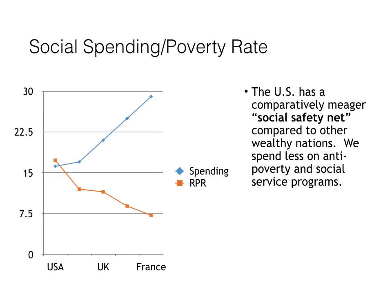There are a number of explanations economists put forward to explain this paradox, but one really simple one is that we have comparatively few tax-funded social welfare programs, or a comparatively meager social safety net compared to other wealthy nations. That means we spend less on anti-poverty and social service programs. For example, in a country like France or Germany, the government provides all citizens with guaranteed health care — that's a right of citizenship.